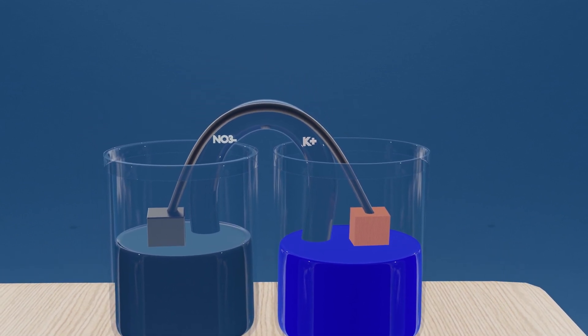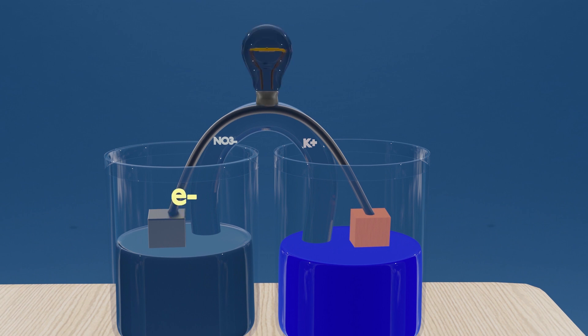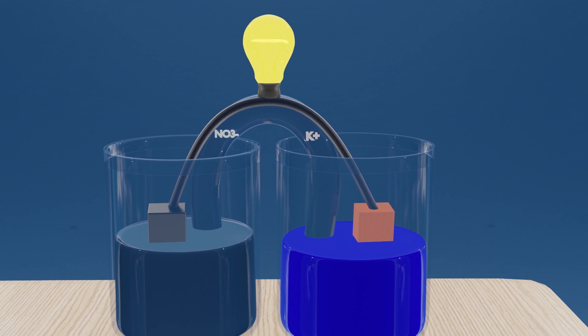As we put these pieces of the galvanic cell together, electrons start flowing from the negative part to the positive, which we call electricity, and can turn on a light bulb or we can measure it with a voltmeter.